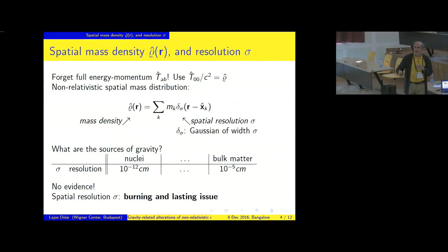On the contrary, if gravity is not that sensitive to the subatomic details, at the other extreme, we have to set sigma to about 10 to the minus 5 centimeters, meaning that the source of Newtonian gravity is bulk matter—the gravity does not see the atomic or subatomic details. Now, observe that there is no evidence so far which extreme must be our choice.